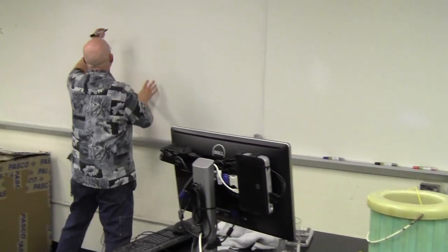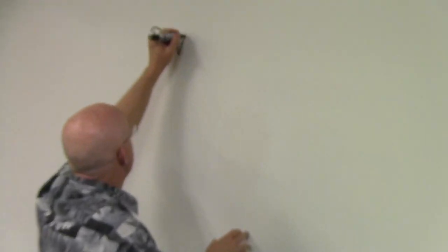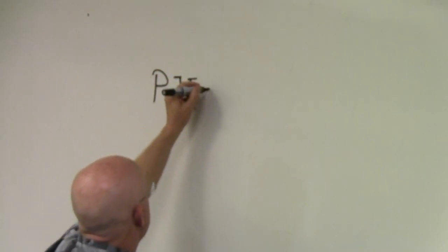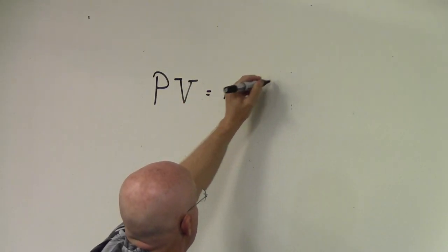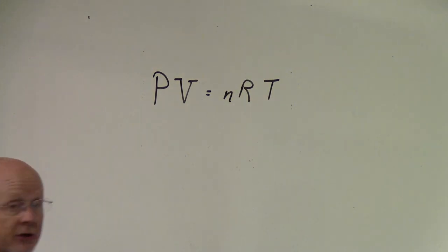Before I get started, let me talk about the ideal gas law that we just finished in lecture. If you didn't get a chance to see all of the lecture of chapter 11, do that first. One of the things you'll see near the end is the ideal gas law: PV = NRT, which was one of our discussions.